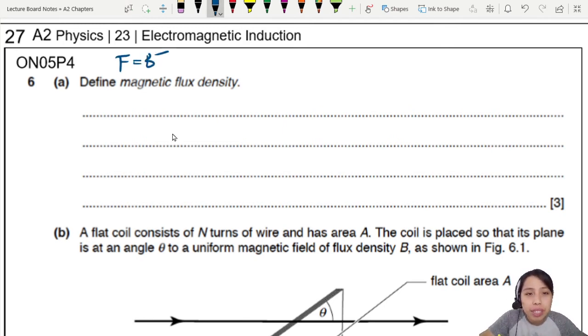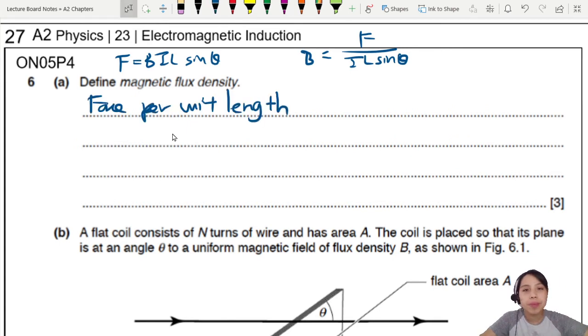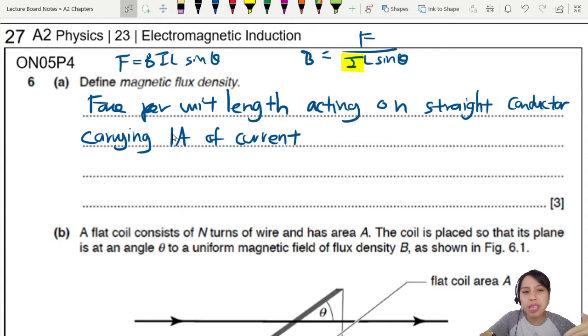Okay, F equals to B I L sine theta. You want to define B, right? So you rearrange to F equals to I L sine theta. Make sure you mention all these terms: F, I, L, theta. So what you can say is force per unit length, F over L. Force on what? Oh, acting on a straight conductor carrying 1 amp of current.